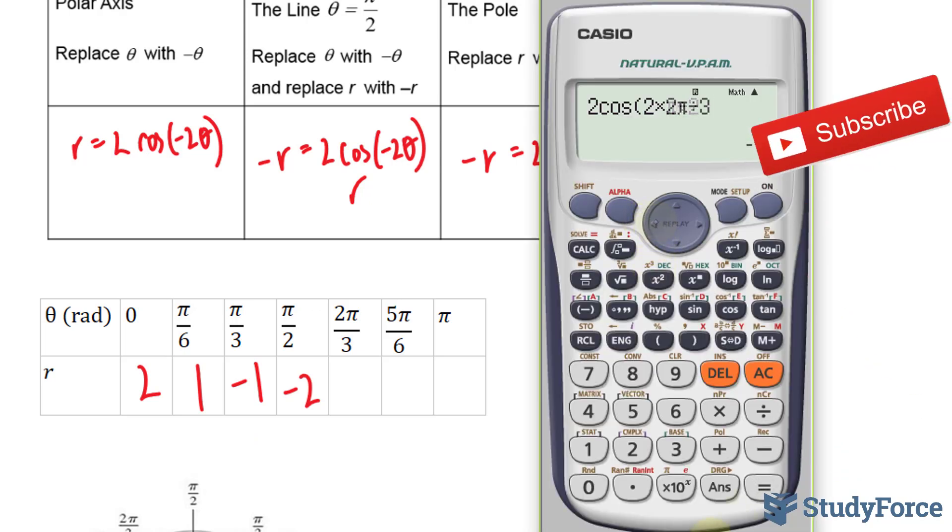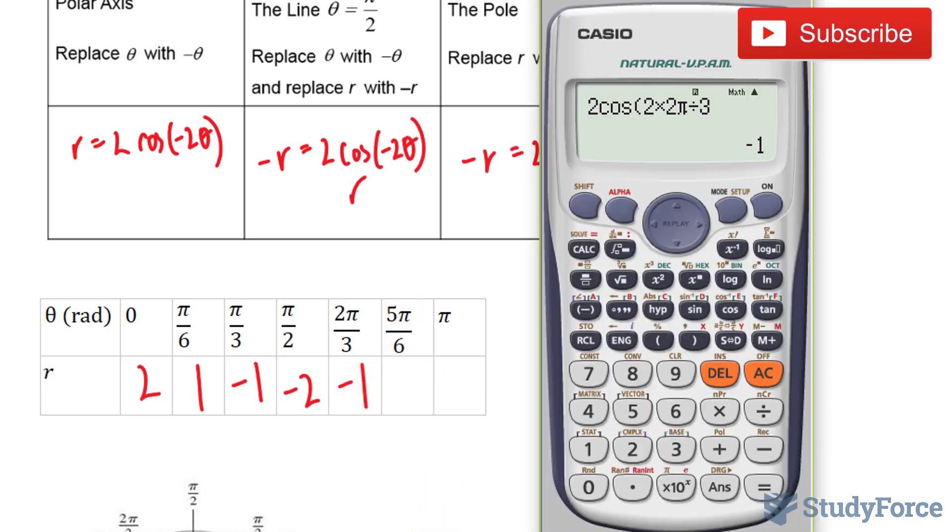2 pi over 3, negative 1. 5 pi over 6, that's positive 1. And finally, pi, you will get 2.